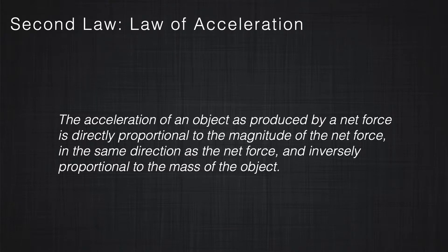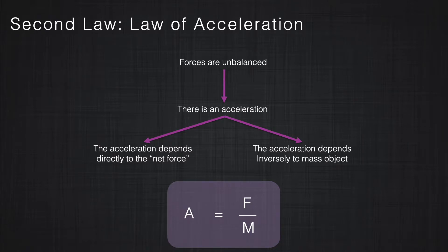The second law of Newton is the Law of Acceleration. Based on this law, if we apply a force to an object and disturb the balance of the object, the object will accelerate in the direction of the force. This acceleration is directly related to the amount of force and inversely related to the mass of the object — the larger the mass, the slower the acceleration; the smaller the mass, the faster the acceleration. This law can define the unit of force for us.